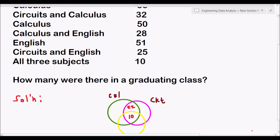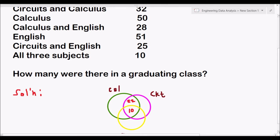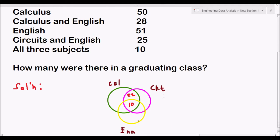Now, we consider the students who like circuits and English. We have 25. We have already 10 here, so that is 25 minus 10, we will have 15. Now, we have Calculus and English. How many students like calculus and English? We have 28, minus 10, so we have 18.